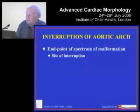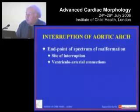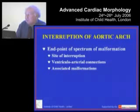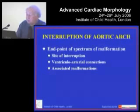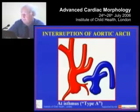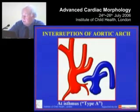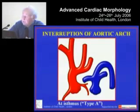We also need to take note of the site of interruption. When describing interruption of the arch, we need to note that there can be different ventricular arterial connections, although I'm not going to emphasize that. What I'm going to show you is the site of interruption, and then move on to the associated malformations, which are more or less the same in coarctation as in interruption. Classically, interruption of the aortic arch is described as type A, type B, and type C.